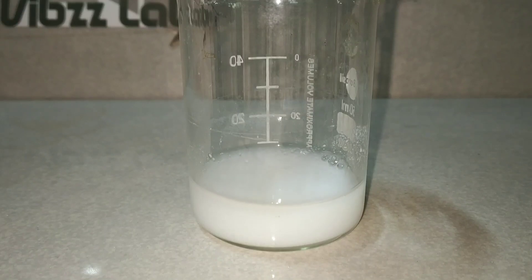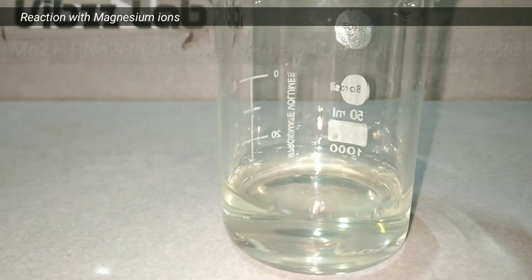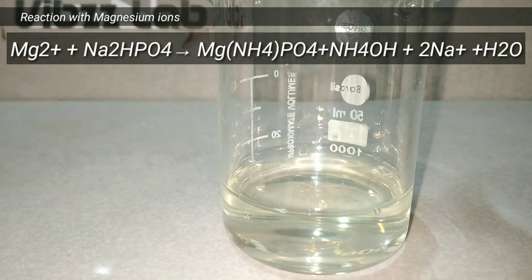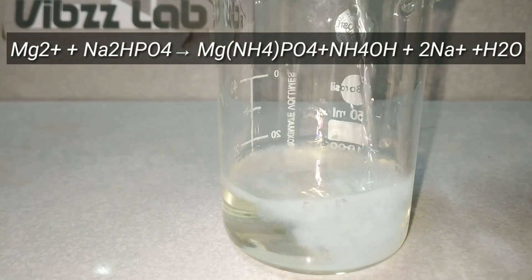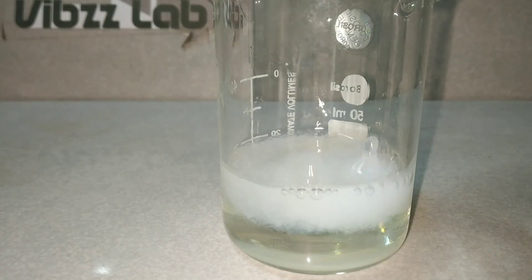And this is the white precipitate of lead phosphate. On adding disodium hydrogen phosphate to magnesium salt mixed with aqueous ammonia and ammonium chloride, we get a white precipitate of magnesium ammonium phosphate.